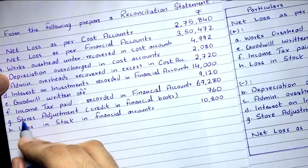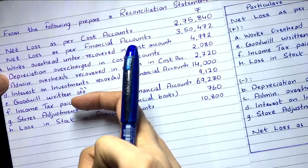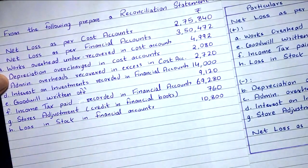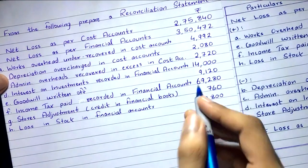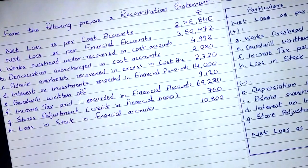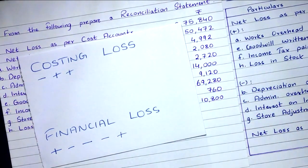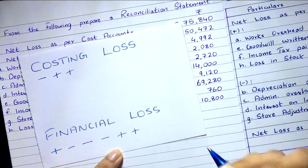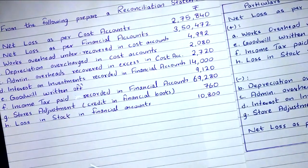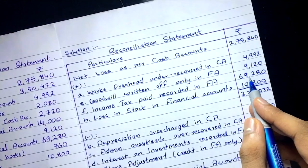Transaction F: income tax paid recorded in financial accounts — 69,280. This is also a purely financial item. Income tax paid is an expense — we pay tax to the government. Expense recorded in financial accounts means loss is more. Positive relationship, impact is positive. So this transaction is added. Income tax paid recorded in financial accounts: 69,280.